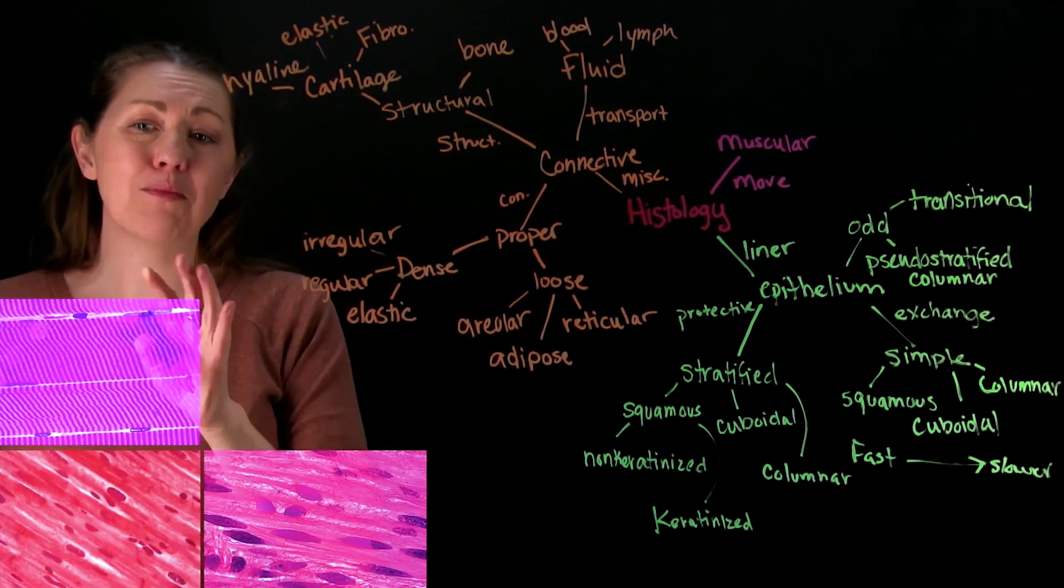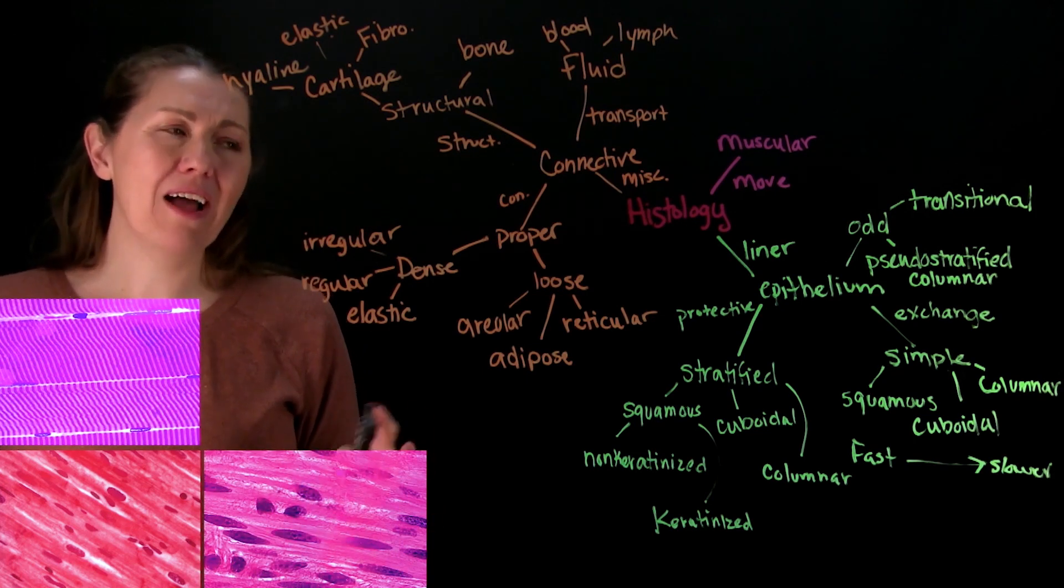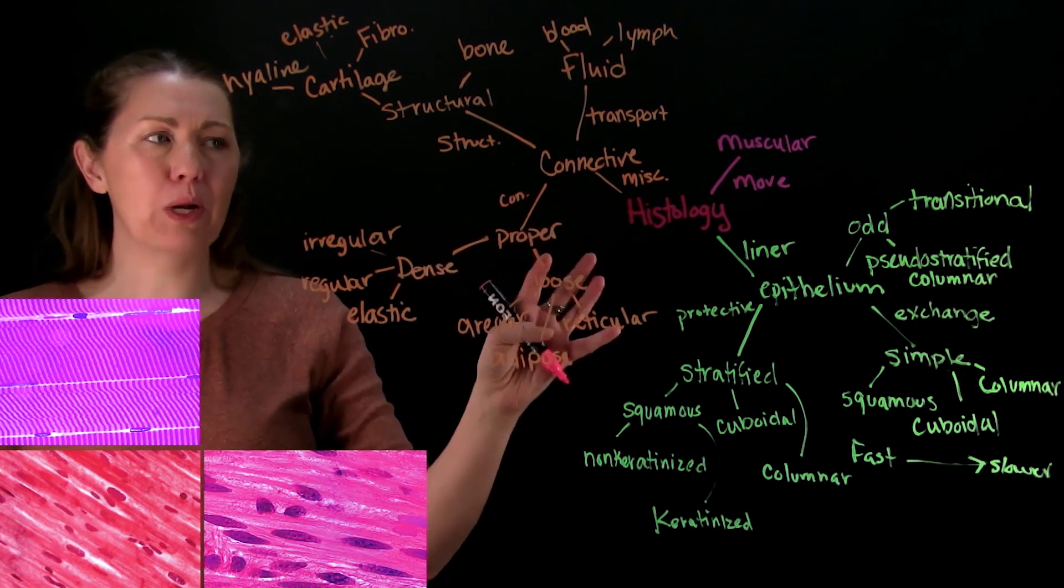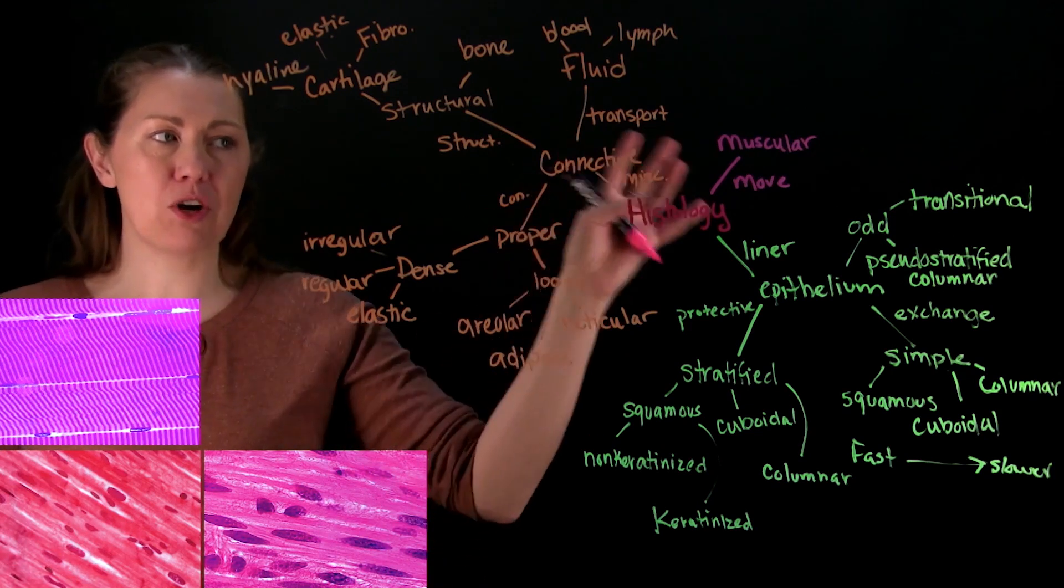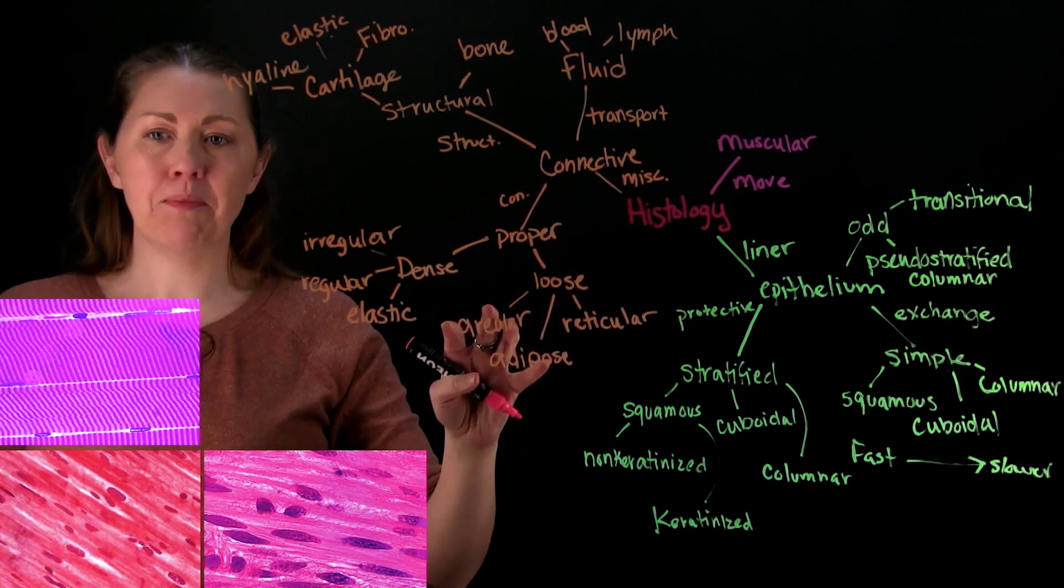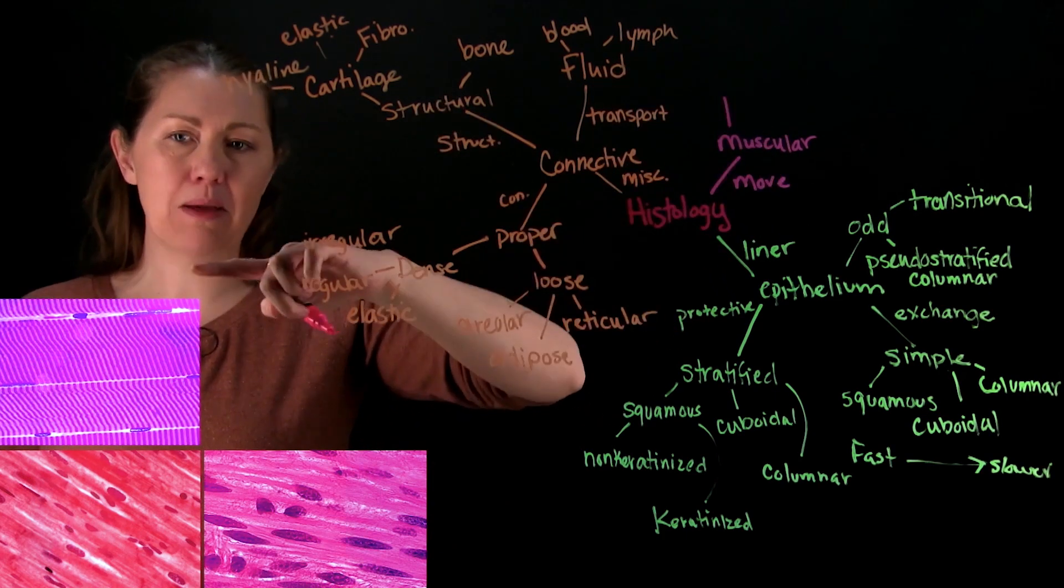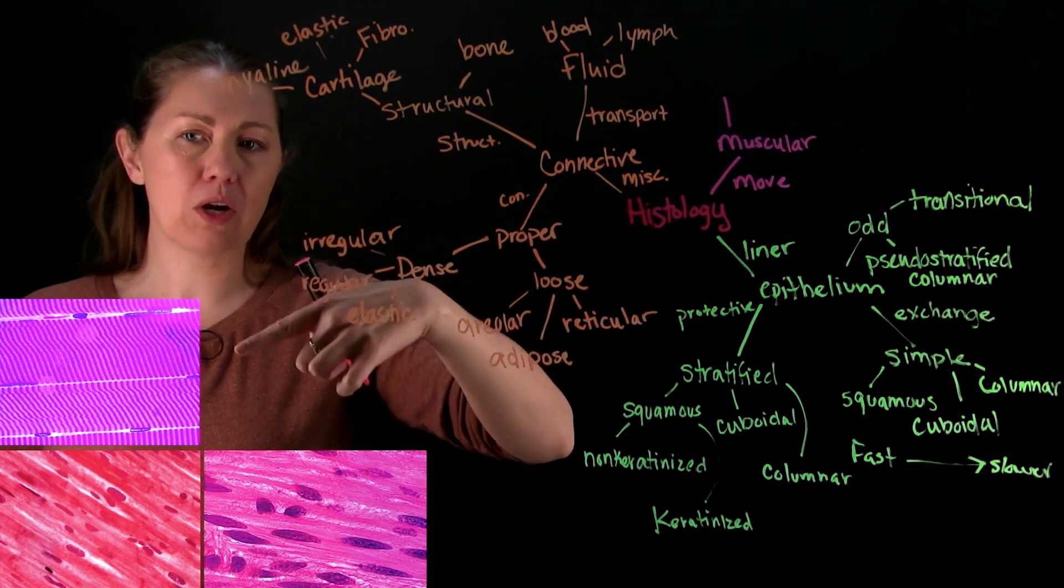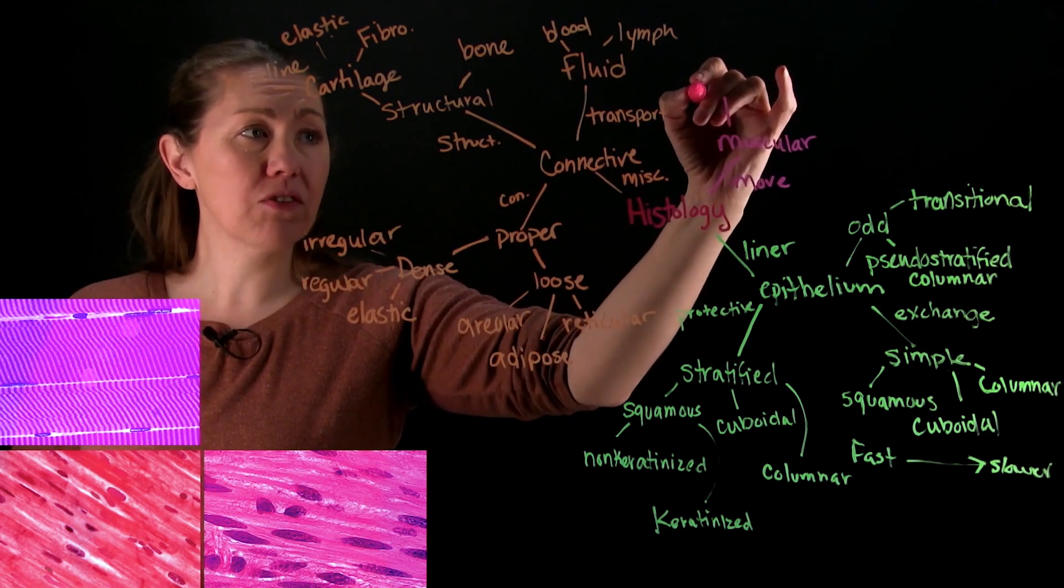So muscular tissue comes into three varieties. There are different ways that you can organize it. I have toyed around with how I want to do this in the map. I can never find one that I really love so I'm just going to branch out all three but talk about the ways that you can group them. So let's name them kind of going from the same order that I have these images over here in the corner. This one right here with a lot of stripes looks like big bands, that's your skeletal muscle.